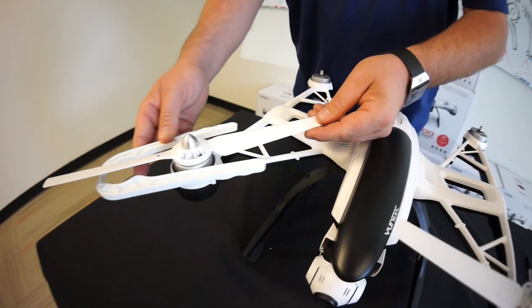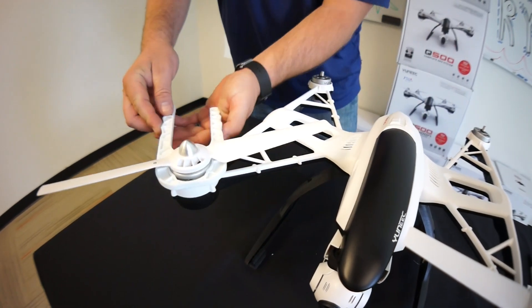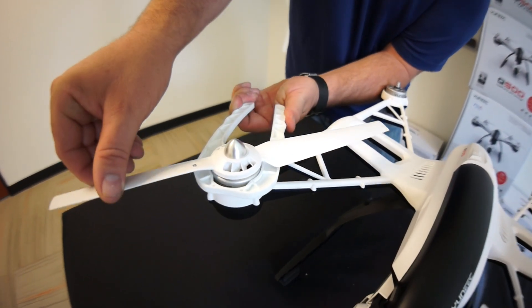Removing the blades is as simple as installing. Just go ahead and put your prop installation tool on. You want to spin it in the direction of the leading edge.